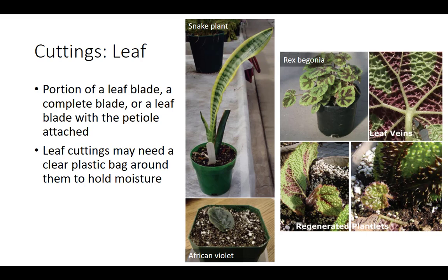Leaf cuttings consist of a portion of a leaf blade, a complete leaf blade, or a leaf blade with the petiole attached. Leaf cuttings are typically used when plant materials are scarce and when large numbers of plants are needed. Sansevieria snake plant is very easy to propagate, but the cutting must be placed in the same orientation as found on the plant. African violets are also easily propagated by detaching the leaf from the plant, inserting the leaf into the soil, and sealing the container with the cutting in a clear plastic bag.